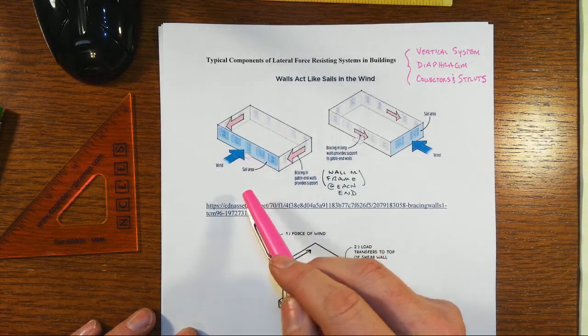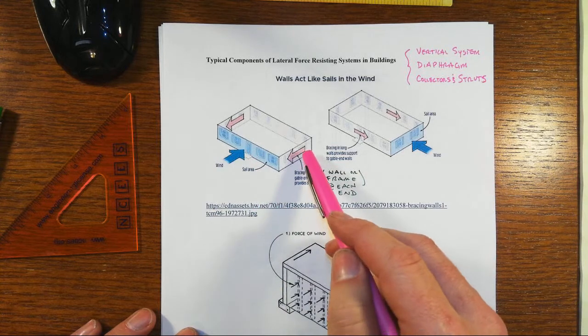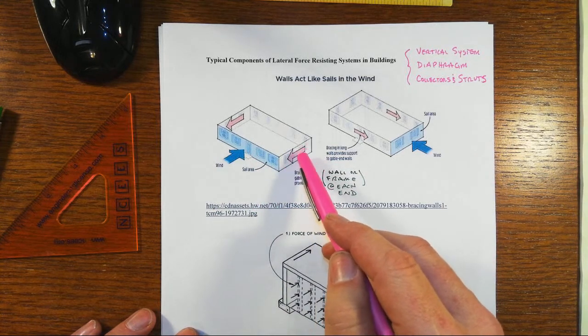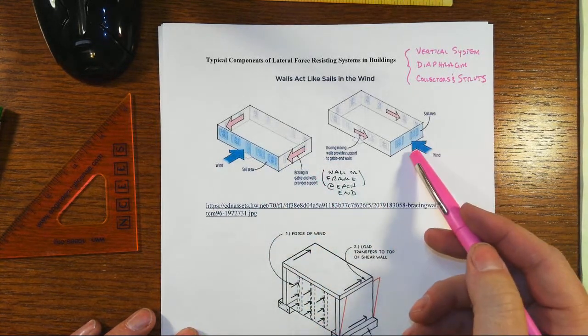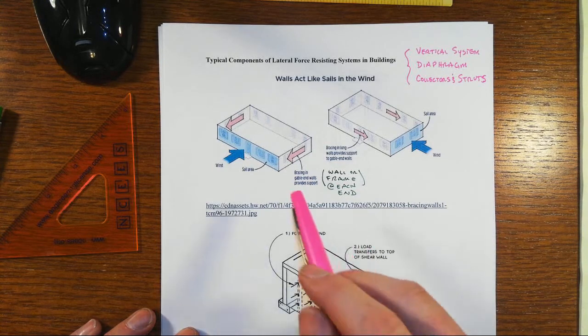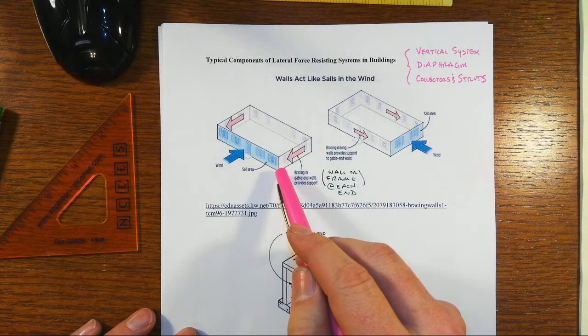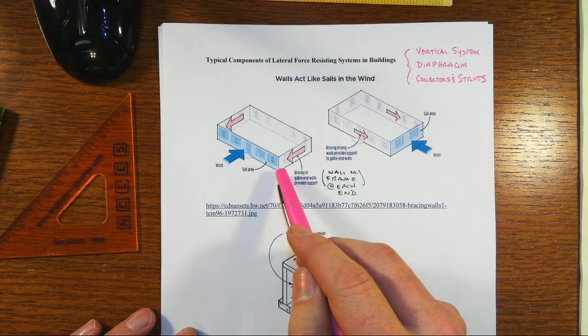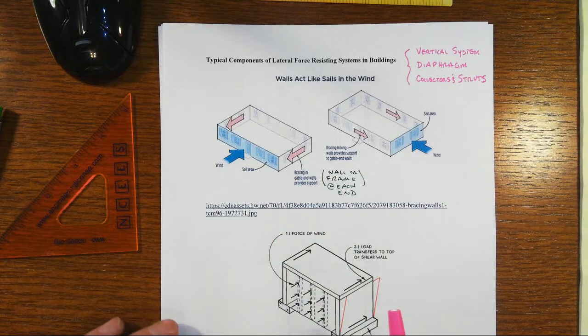And so we'd have the wind trying to shear the building, rack it over sideways, and then these walls would resist. And that would happen, of course, in either direction. In your typical one-story strip mall type of situation, you would see something fairly similar to this kind of system.